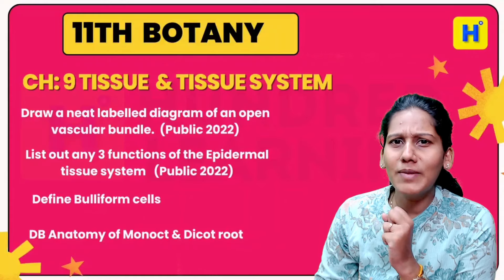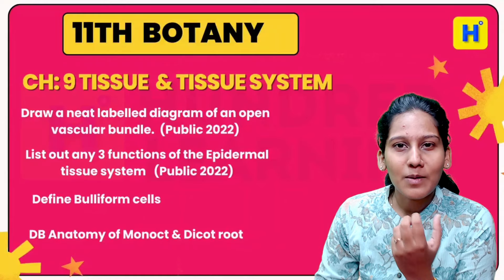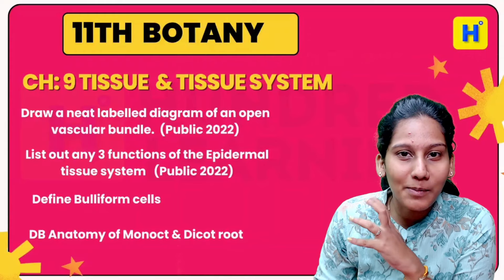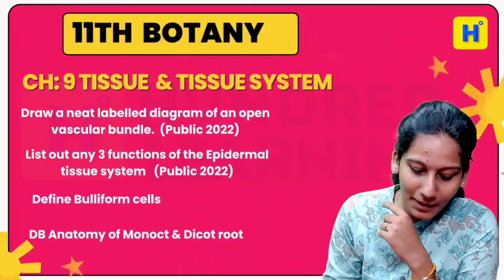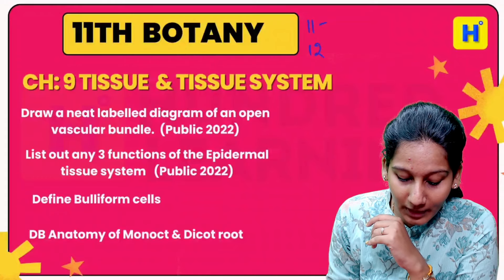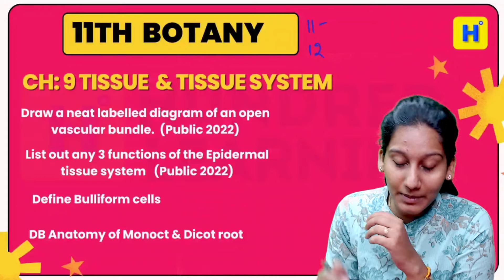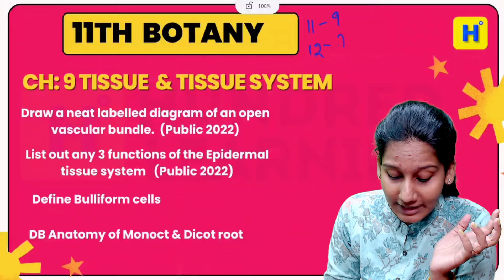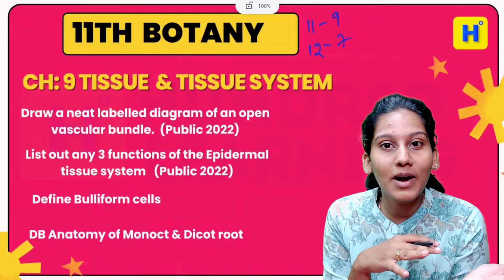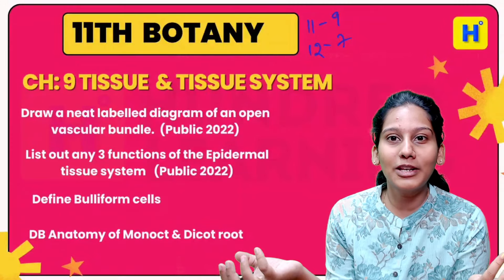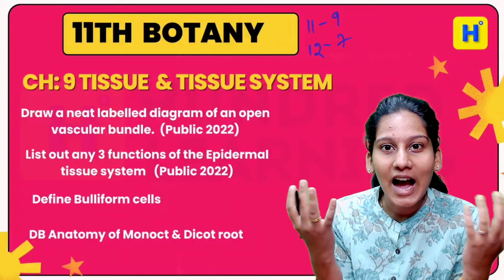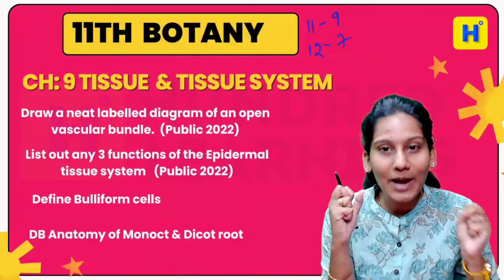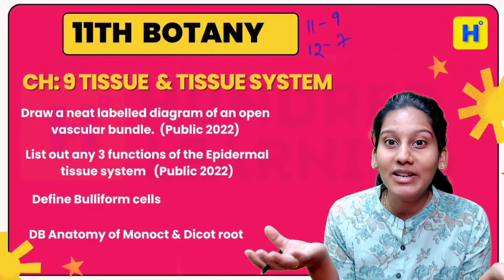For 11th and 12th biology students, there is no time to study entire books. In the 11th standard there are many chapters, and in the 12th standard there are 7 chapters. If you want to study physics and chemistry, there is more English too. But there are so many chapters in biology.